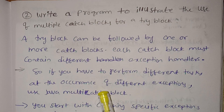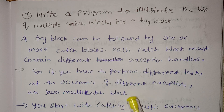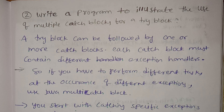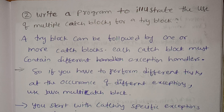Now we are going to perform different tasks. In the try block, we place the doubtful code — where we expect exceptions. If we expect an exception, we use the try block followed by catch blocks to handle different exceptions. That means, the catch will catch the exception.